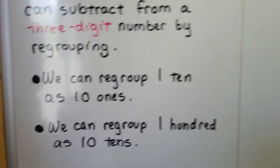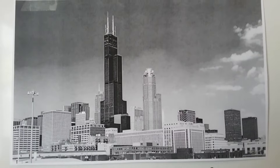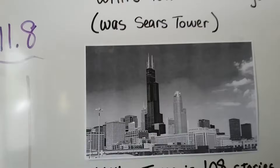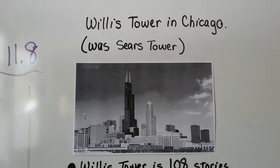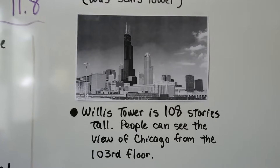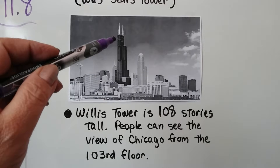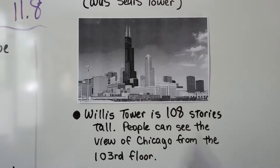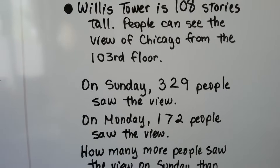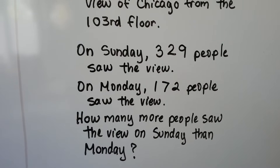Look at this picture of the Chicago skyline. That real big tall building is Willis Tower — it used to be called Sears Tower. Willis Tower is 108 stories tall, and people can see the view of Chicago from the 103rd floor. On Sunday, 329 people saw the view; on Monday, 172 people saw the view.